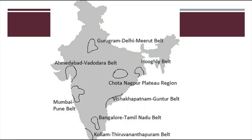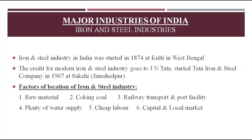By looking at the map we can easily understand these industrial regions. Now let us discuss the major industries of India. The most basic and important industry, on which all other industries depend, is the iron and steel industry. Engineering industry, locomotive industry, machine tools industry, automobile industry, and agriculture equipment industry — everything depends on iron and steel industry, making it the most important metal-based industry in India.